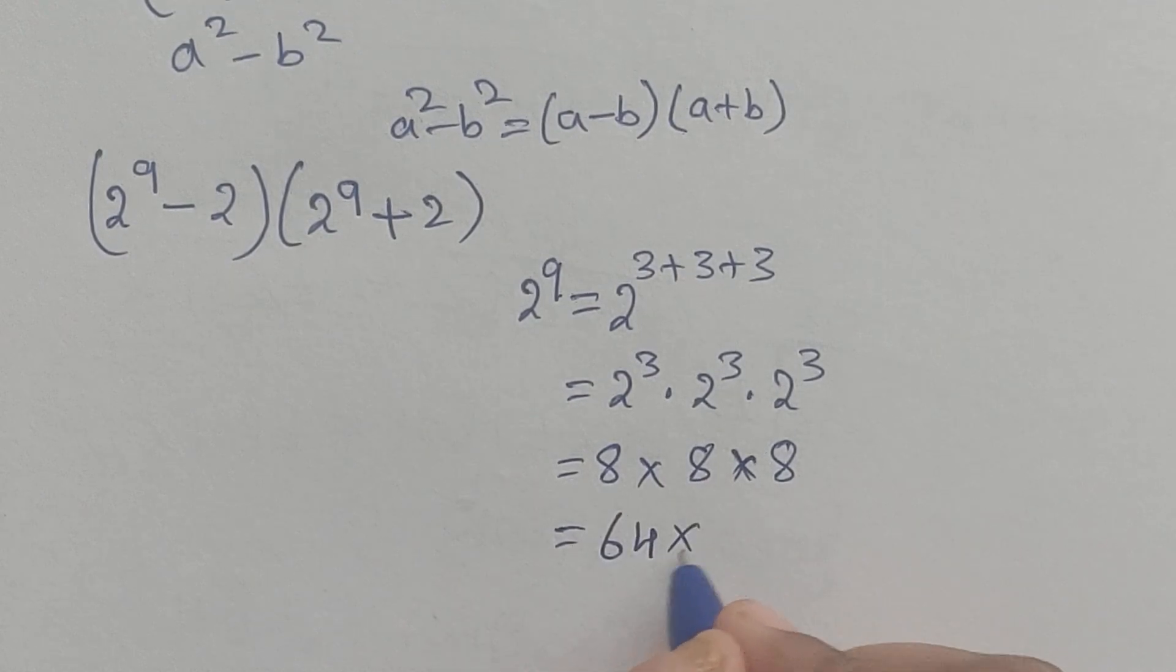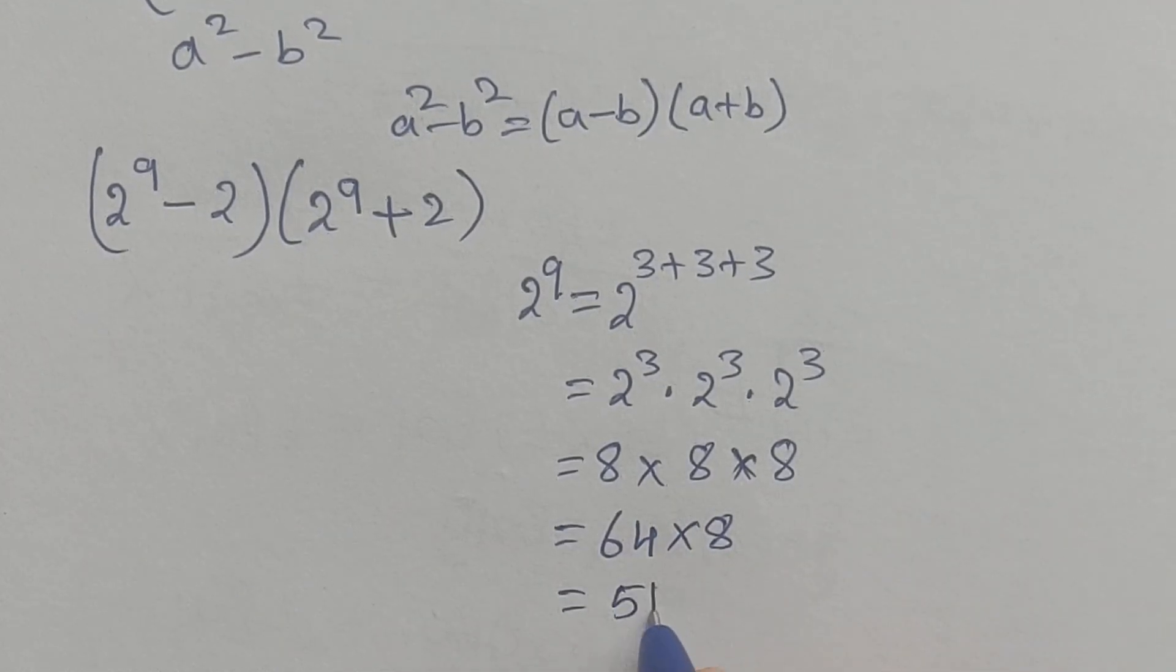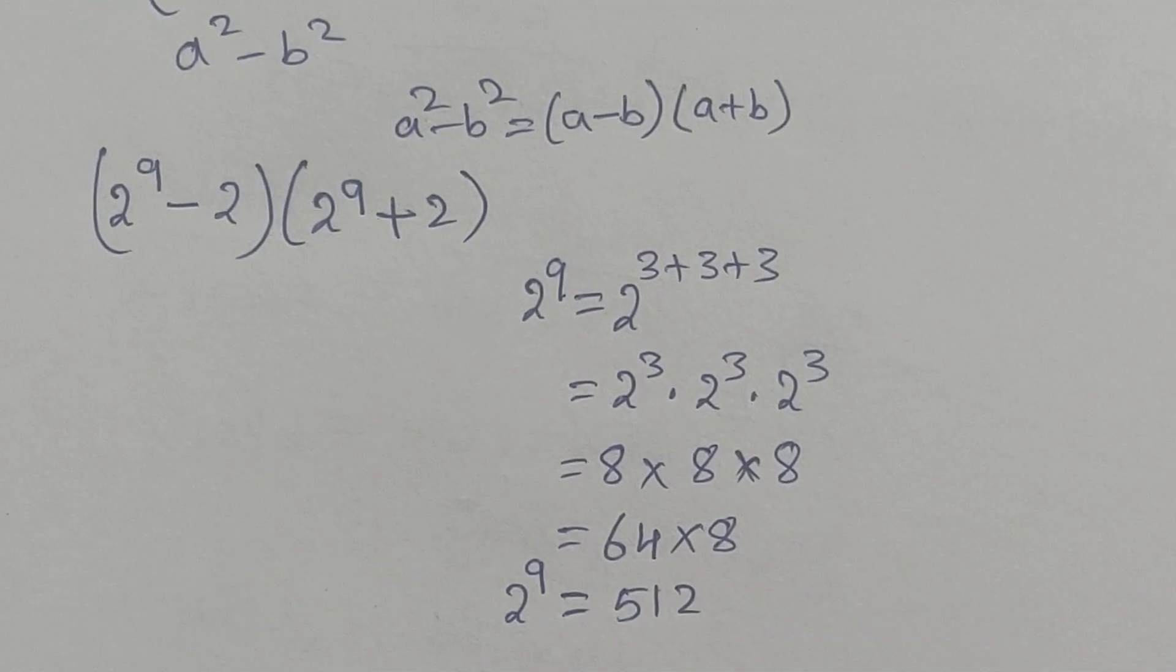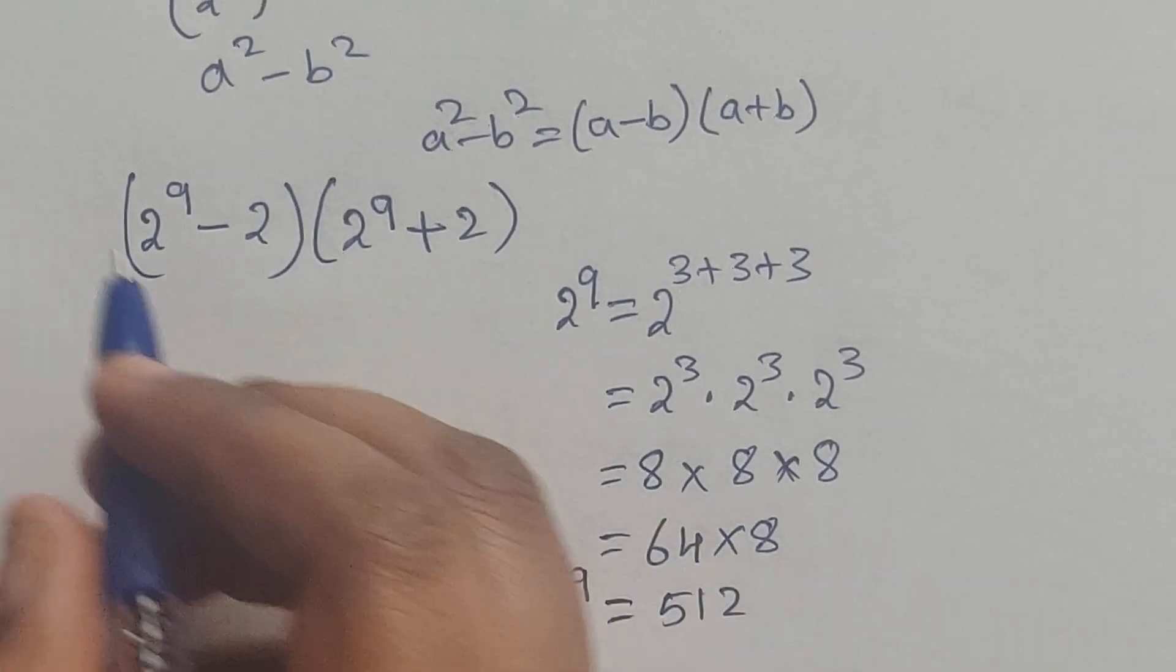2 cubed is 8, so 8 times 8 equals 64, and 64 times 8 equals 512. So 2^9 equals 512. Now substitute this value.